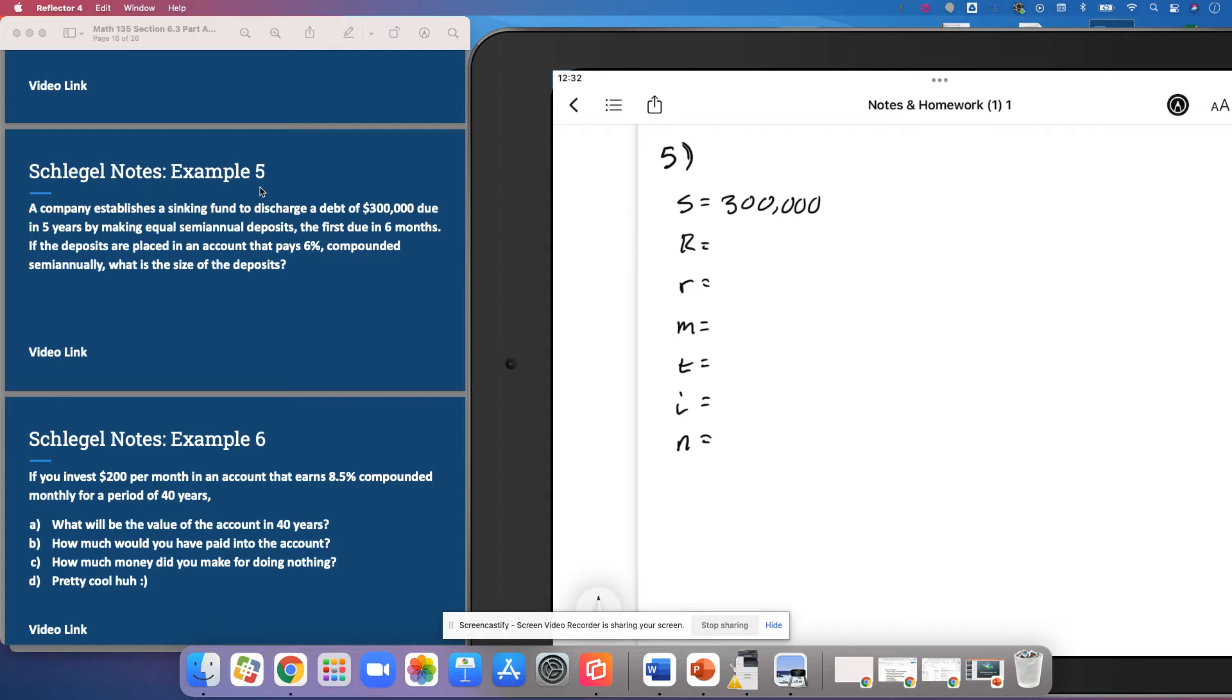And so it's going to be in 5 years, so our T is 5. Semi-annual deposits, so twice a year. And if the deposits are placed in an account that pays 6% compounded semi-annually, so the rate is 0.06. I is R over M. N is M T. 0.06 over 2, so 0.03. M T is 2 times 5, so 10. And we have our formula.